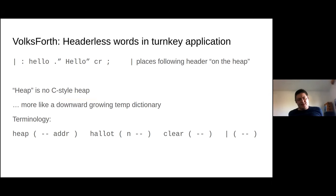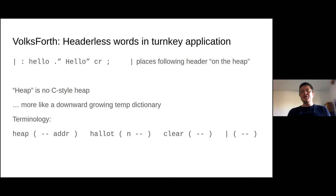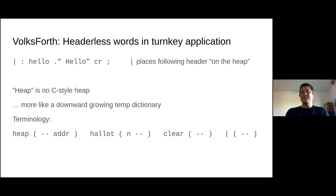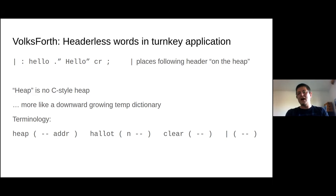The thing that mitigated the whole code size concern is VolksForth's ability to create headerless words in a turnkey application — namely to make headers temporary. This is done with a simple pipe sign as a prefix to a definition. If you do that, VolksForth will put the name — the header — onto the heap. This heap is not a heap in the C sense, not something you can allocate and free arbitrarily. The best way to describe it is a downward-growing temporary dictionary.